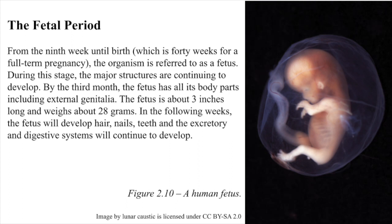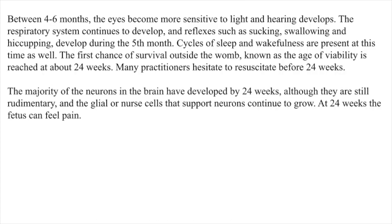The Fetal Period. From the ninth week until birth, which is 40 weeks for a full-term pregnancy, the organism is referred to as a fetus. During this stage, the major structures are continuing to develop. By the third month, the fetus has all its body parts, including external genitalia. The fetus is about three inches long and weighs about 28 grams. In the following weeks, the fetus will develop hair, nails, teeth, and the excretory and digestive systems will continue to develop. Between four to six months, the eyes become more sensitive to light, and hearing develops. The respiratory system continues to develop, and reflexes such as sucking, swallowing, and hiccuping develop during the fifth month. Cycles of sleep and wakefulness are present at this time as well.